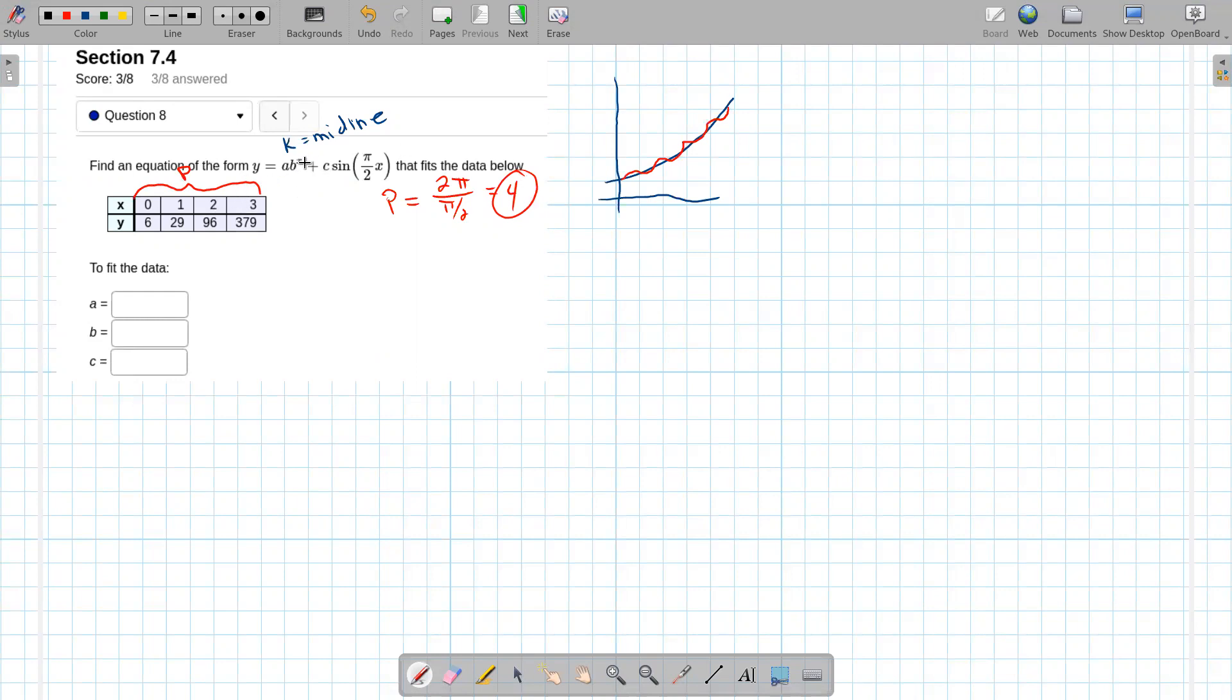And then other things to think about. If we plug in 0 here, so let's call this instead of y, let's call it f of x. And f(0) would be a times b to the 0 plus c times the sine of 0. b to the 0 is 1, so that gives me a.